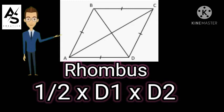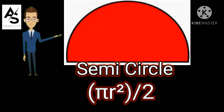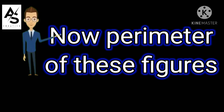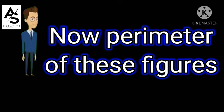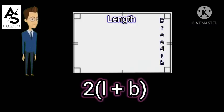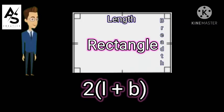Parallelogram — base × height. Rhombus — half × diagonal 1 × diagonal 2. Semicircle — π r² / 2. Now, perimeter of these figures: Rectangle — 2 × (L + B).